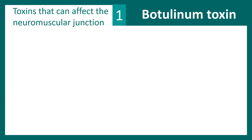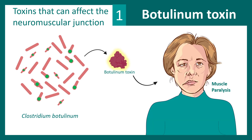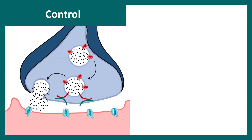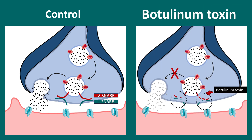There are also specific toxins that can affect the neuromuscular junction. Botulinum toxin, derived from the bacterium Clostridium botulinum, leads to muscle paralysis — and in specific doses is used in cosmetic procedures like Botox. Normally the V-SNARE and T-SNARE interaction leads to vesicle fusion and neurotransmitter release. Botulinum toxin breaks the T-SNARE and V-SNARE interaction, leading to failed fusion of the vesicles and blocking neurotransmitter release.